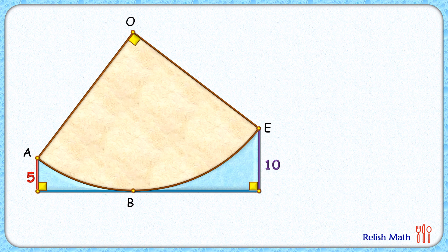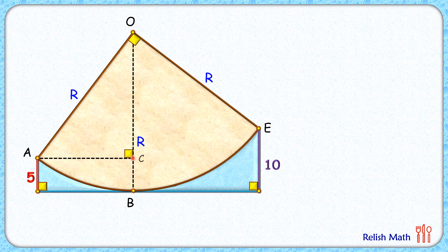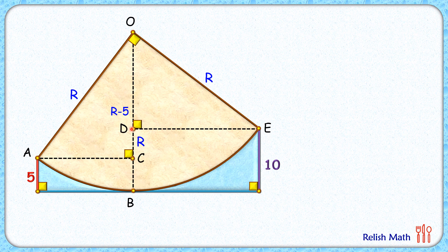We'll solve the question in two parts: first we'll find the radius of this quadrant, then we'll find the area of the blue region. Let's assume the radius of the quadrant is r centimeters. Joining OB where B is the point of tangency, OB is perpendicular to the blue line segment. From point A we drop a perpendicular on OB — since all angles are 90 degrees it forms a rectangle, so CB equals 5 centimeters and OC equals r minus 5. Similarly, from point E we drop a perpendicular on OC, giving DB equals 10 centimeters and OD equals r minus 10.